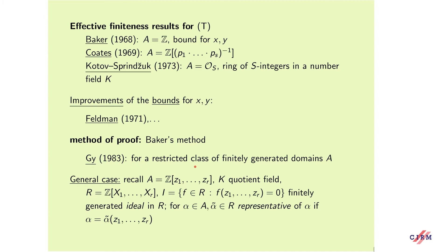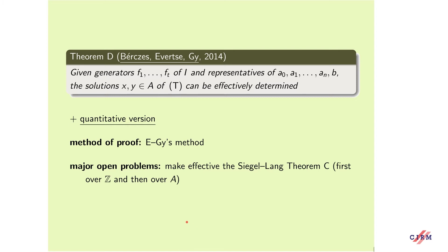In 1983, this was extended to so-called restricted classes of finitely generated domains. To state the general result: if the generators F₁,...,F_t of the ideal I and the representatives of the coefficients are given, then the solutions X, Y of the Thue equation can be effectively determined. We proved this theorem together with Bérczes and Evertse and gave an effective version. It is a major open problem to make effective the Siegel-Lang theorem, first over Z and then over A. This seems very hard for the moment.